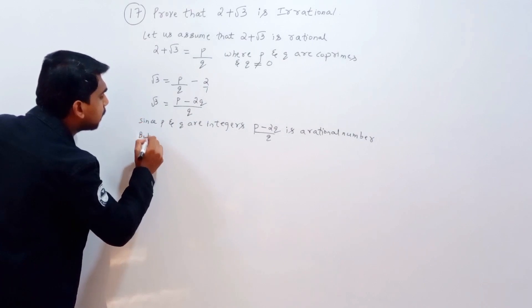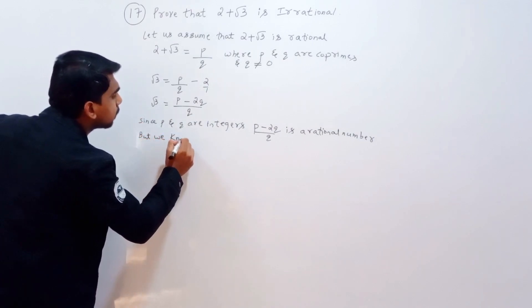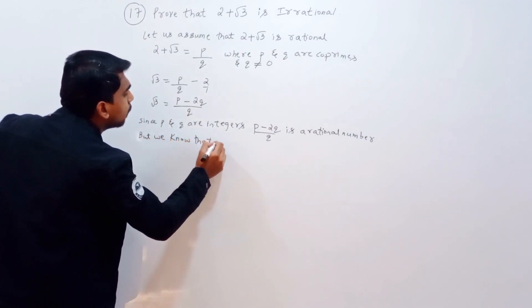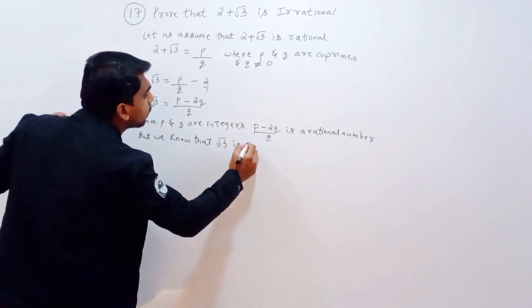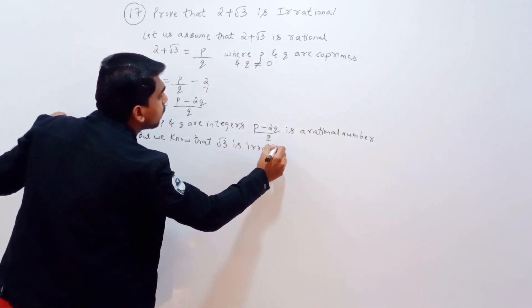But we know that root 3 is an irrational number.